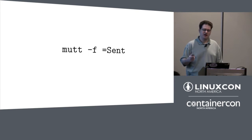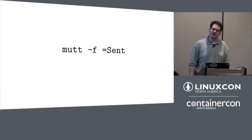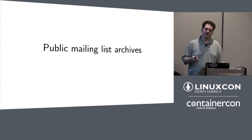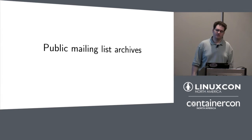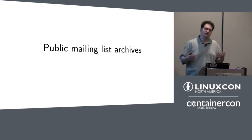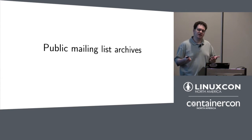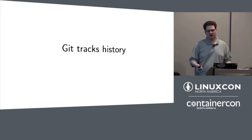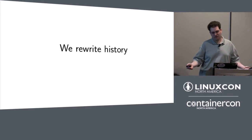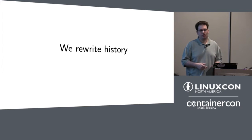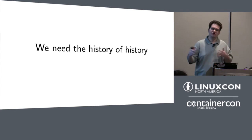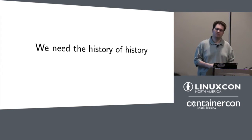You could also dig a mail out of your sent mail folder — I've had to do that more than once — or go grab it out of the public mailing list archives. But in general, the problem is that Git tracks history, but what it's tracking is curated history. We rewrite history all the time, so what we need is the history of history. We need to know what changed — a version of our versions — and Git doesn't actually normally do that.